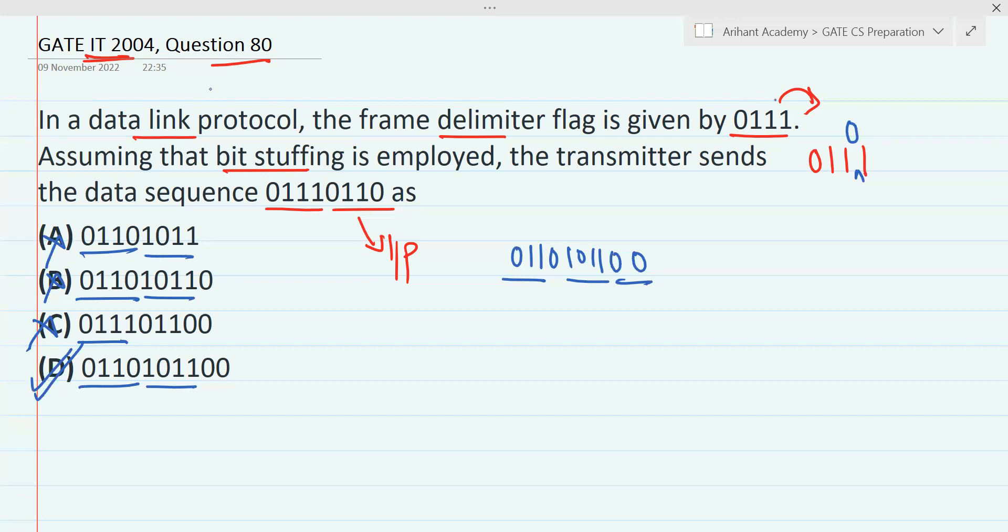So whenever there is a number of continuous ones, using the concept of frame delimiter, we need to add zero just before the last bit. It means that if 011111 was there as the frame delimiter, we need to add a zero bit just here.